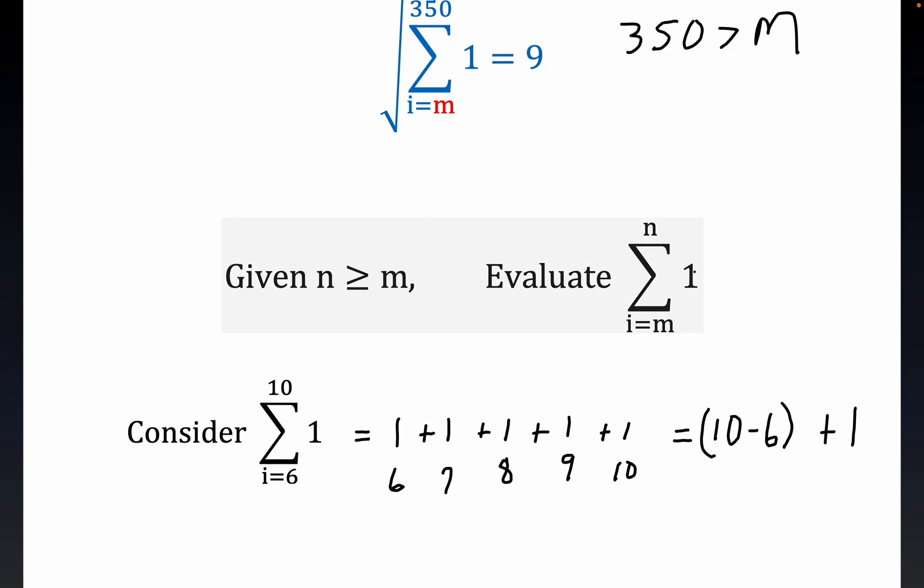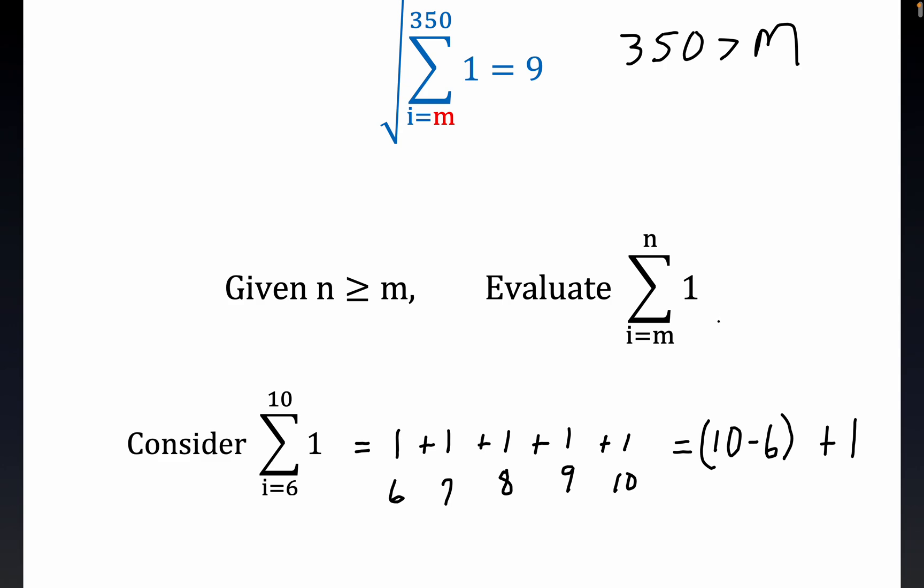But so what we know in general now - and again this is not a formal proof but it's good enough for what I'm trying to show here - this is always equal to n minus m, and I like putting the parens, not necessary really but one of my hangups. n minus m plus 1.